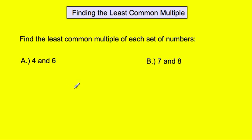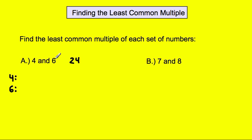We have two numbers, 4 and 6, and we're going to find the least common multiple of 4 and 6. We're going to start by writing the two numbers and finding the multiples of 4 and the multiples of 6. We're going to list out the multiples up to 24. Why 24? Because the least common multiple will never be more than 4 times 6 — that's the highest it can possibly be.